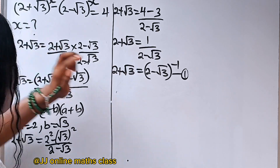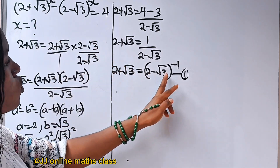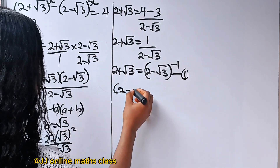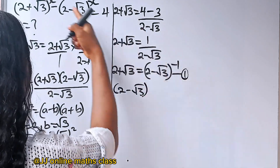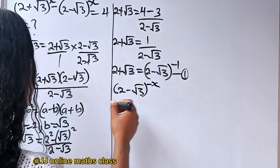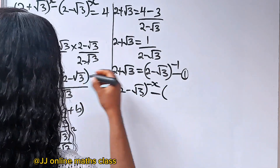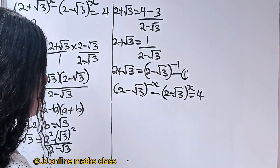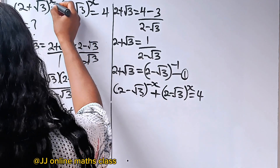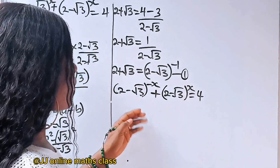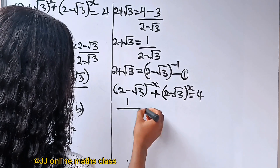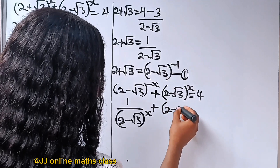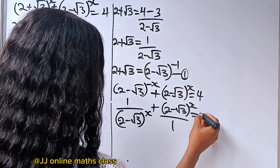We are going to substitute 2 plus root 3 with 2 minus root 3 to the power of minus 1. If we do that, this minus 1 times x gives us minus x. So we have 1 over 2 minus root 3 to the power of x, plus 2 minus root 3 to the power of x over 1, is equal to 4.